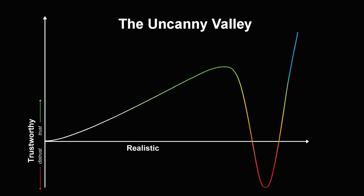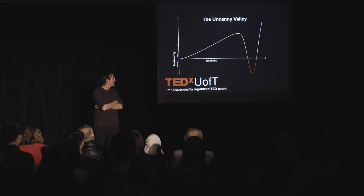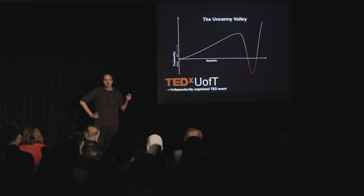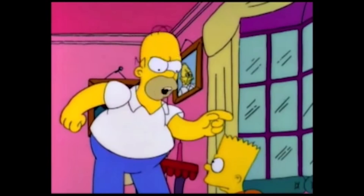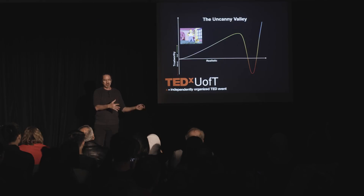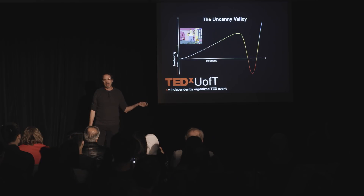The uncanny valley is a two-dimensional graph in which the horizontal axis is realism and the vertical axis is trustworthiness. You would like to think those things go hand in hand. If you take a very simple character who's not very realistic — like Homer Simpson — this dude is very simply drawn, he's not very realistic, and he can star in The Simpsons and tell some really simple, funny stories. And we buy him on that level.